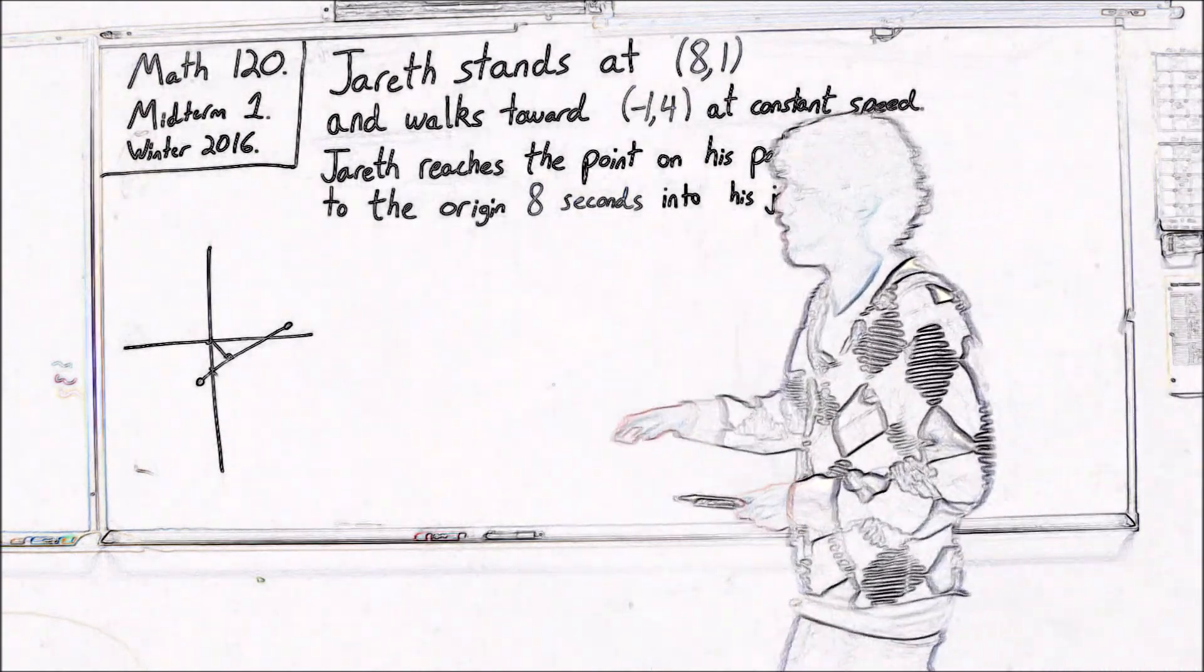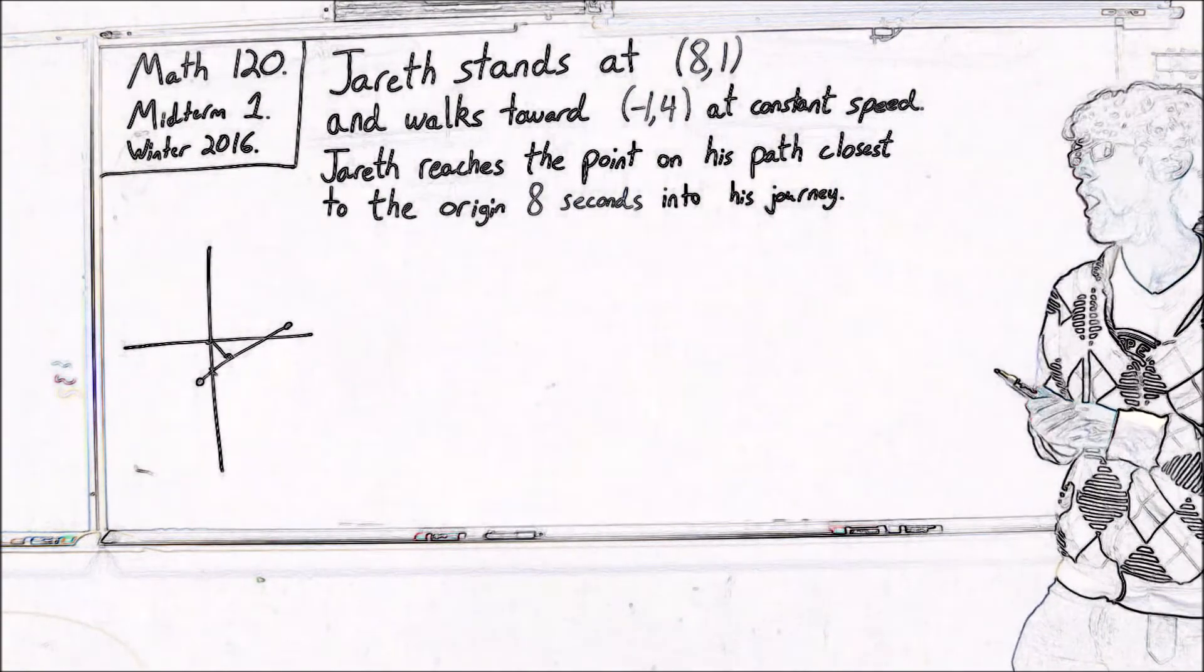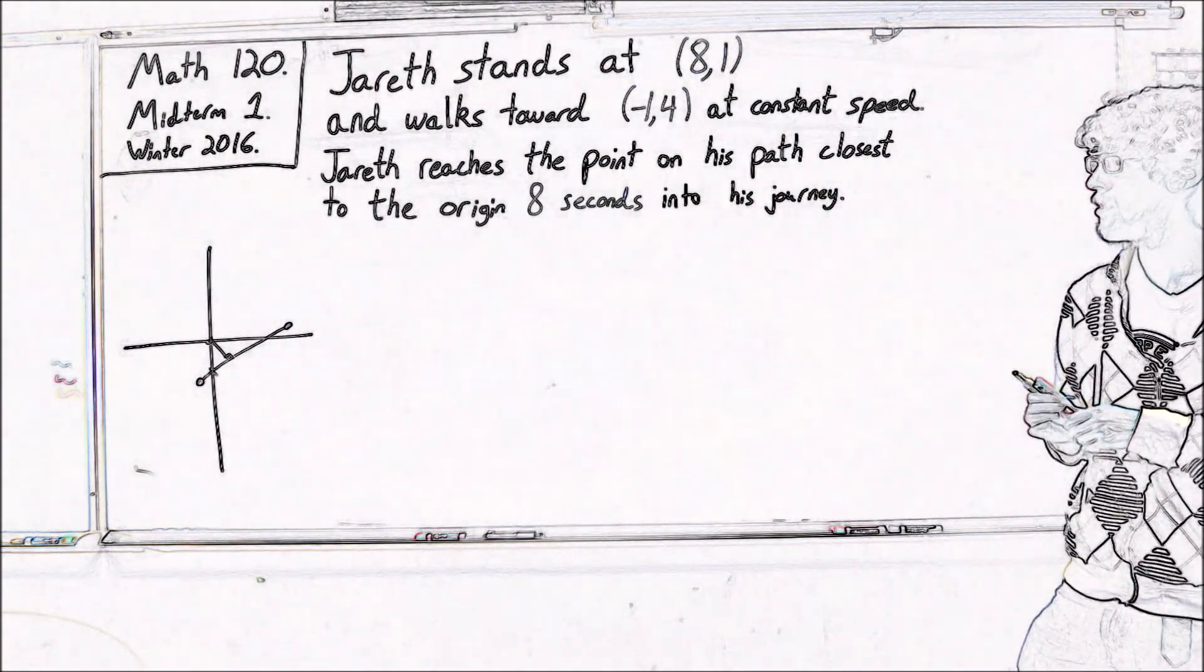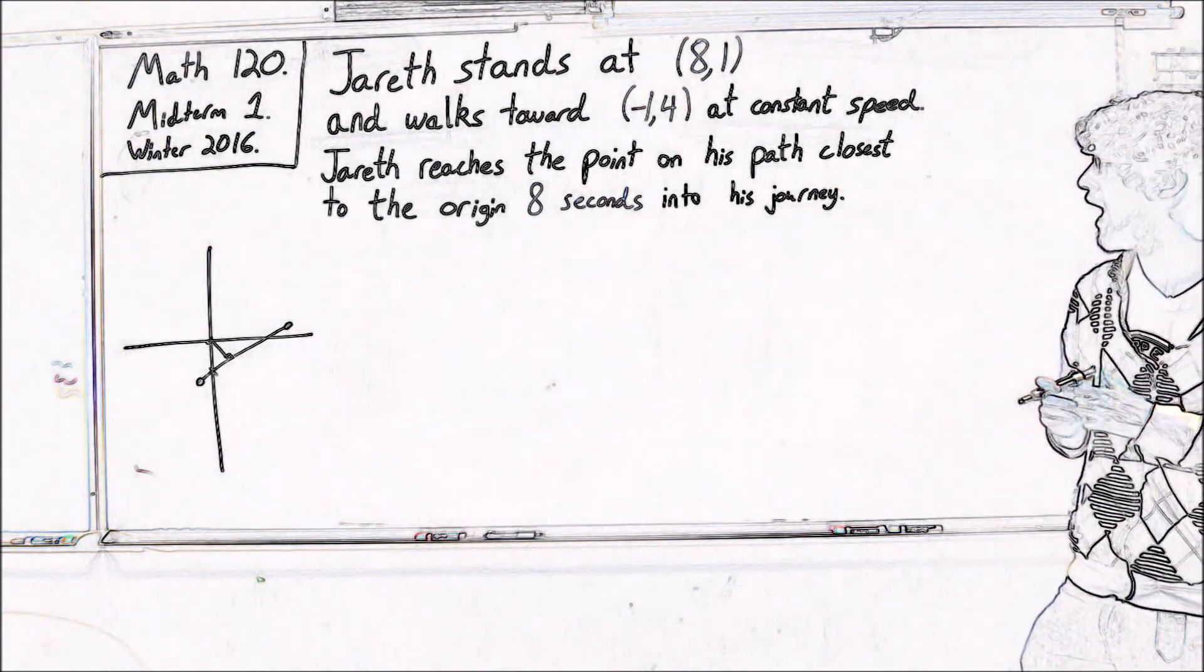So let's write an equation for the path that Jareth travels along. So we're not at this point writing parametric equations. We're just writing an equation in terms of x and y for Jareth's path.